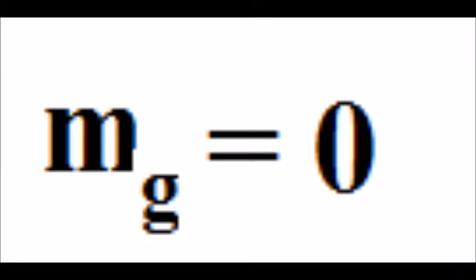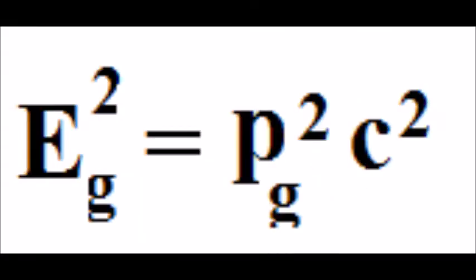We set the graviton's mass equal to zero. So the graviton's energy equation only has a momentum term. Eg is the graviton's energy.